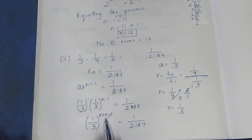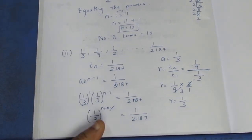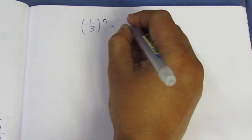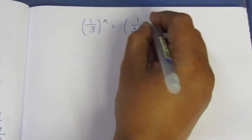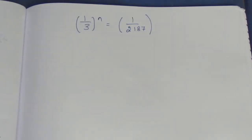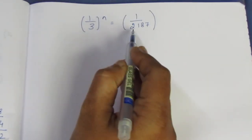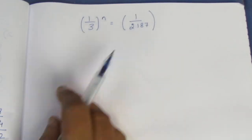So 1/3 to the power n equals 1/2187. We need to express 1/2187 as a power of 1/3. Since 3 to the power 7 equals 2187, we have 1/3 to the power n equals 1/3 to the power 7.